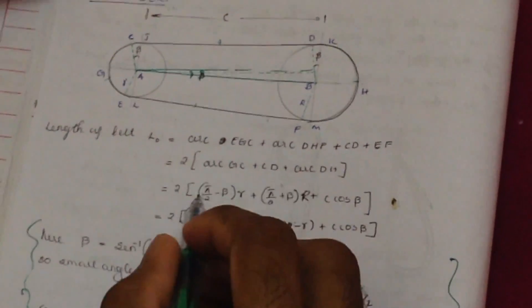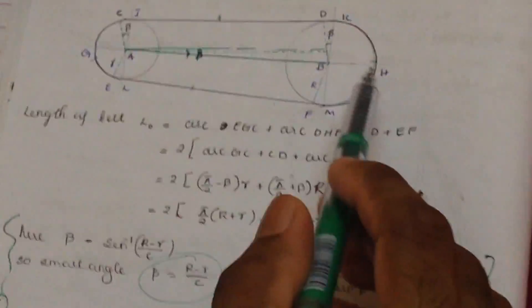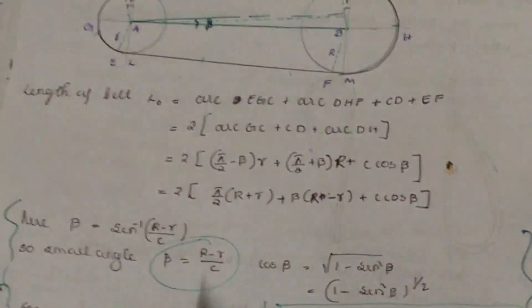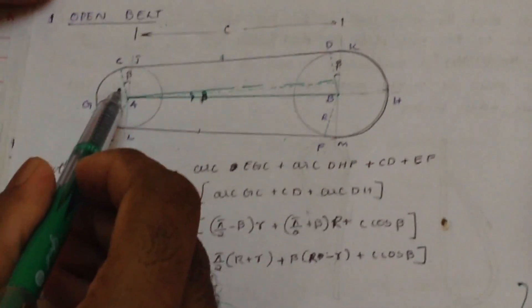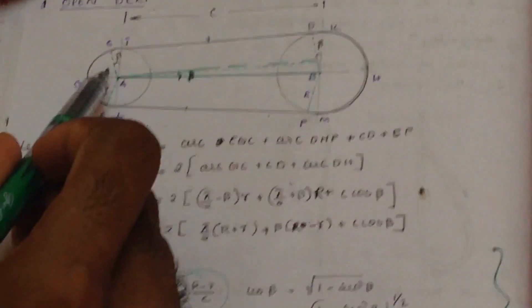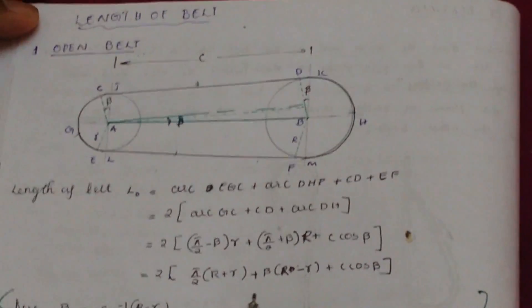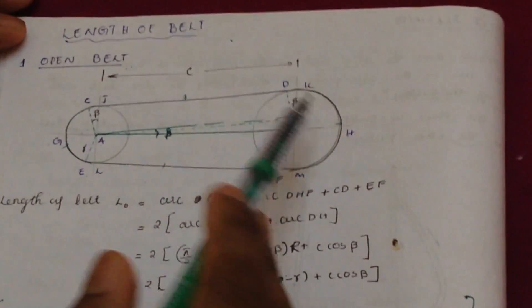So it is equal to 2 times arc CG plus 2 times arc DH plus 2·CD. The arc CG is equal to (π/2 − β)·r, where small r is the radius of the smaller (driven) pulley and capital R is the radius of the larger (driving) pulley. The arc DH is equal to (π/2 + β)·R.